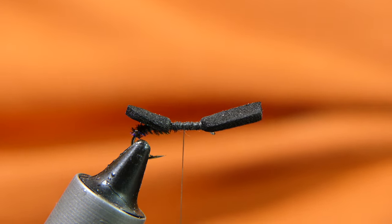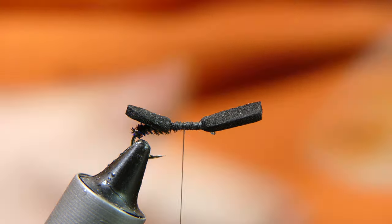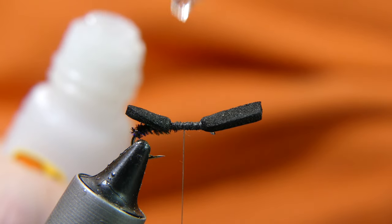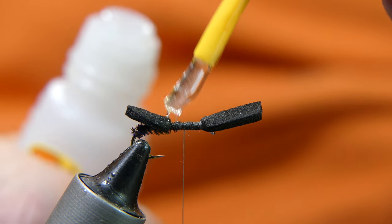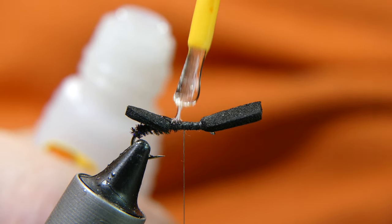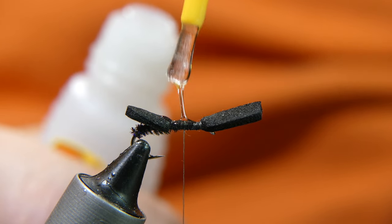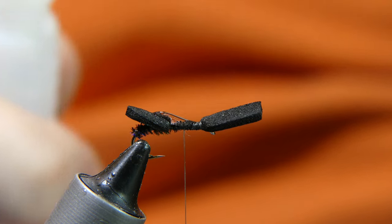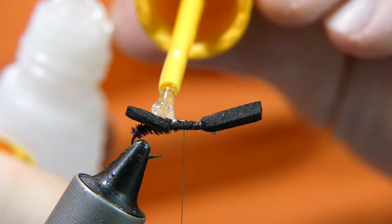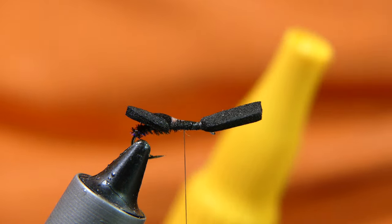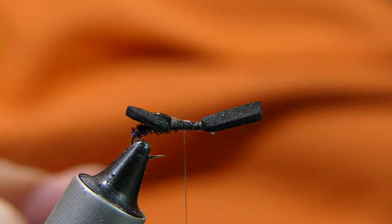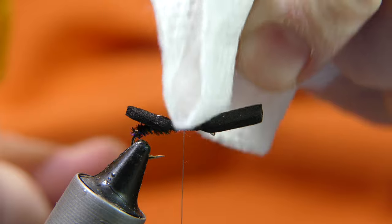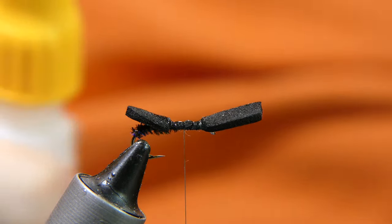Now you're going to add a little more super glue. Couple dabs toward the rear. Don't go up toward the eye section there. Get a little bit off there, that's a little too much. If you get too much on there, just dab it off, like that.